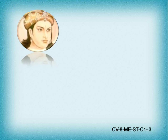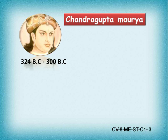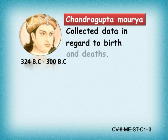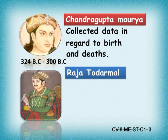Children, we shall know in detail about the contributions made by some people in statistics. Chandragupta Maurya, who lived between 324 BC to 300 BC, collected data with regard to births and deaths during his ruling. Raja Todarmal introduced land and agricultural statistics.